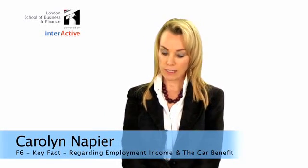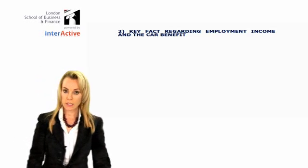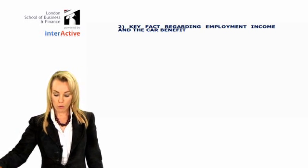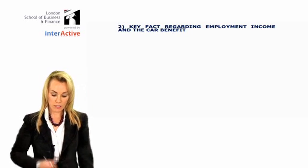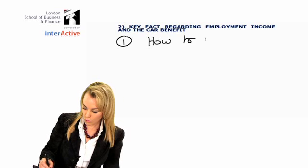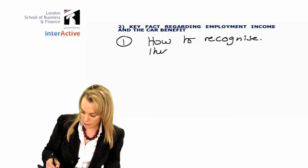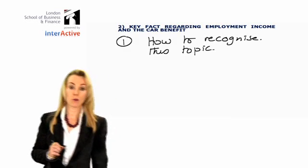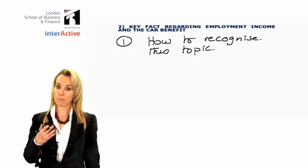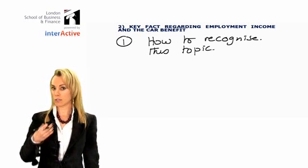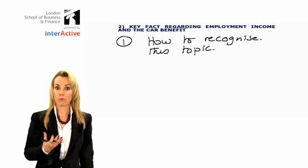The second of my important topics that are always examined is the car benefit, which comes under the heading of employment income. To recognise this topic: it will be an employment income question about somebody who's employed, where the employer provides the employee with a car for personal use. It will probably appear in question one of your exam, or possibly one of the other questions.